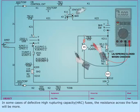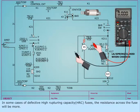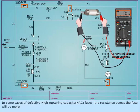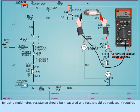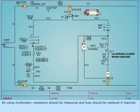In some cases of defective high rupturing capacity HRC fuses, the resistance across the fuse will be more. By using a multimeter, resistance should be measured and the fuse should be replaced if required.